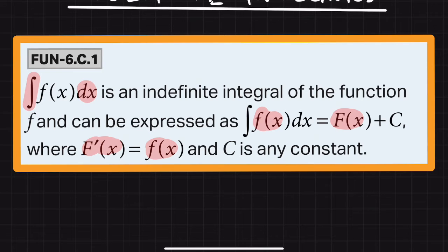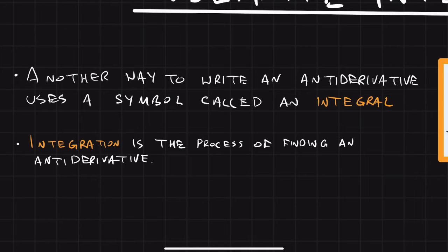If you take the antiderivative of a function and then find that function's derivative, you're going to end up right where you began. Another way to write an antiderivative uses a symbol called the integral.